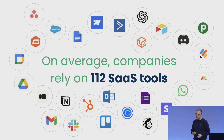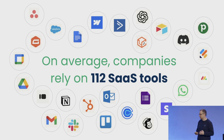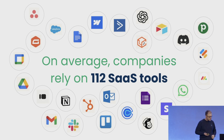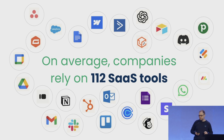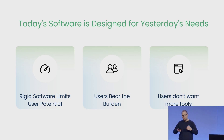Did you know that companies juggle around, on average, 112 SaaS tools? This is on Statista's statistics, and actually about half of those licenses today go unused because people just order more than they need. But even juggling that software, it means that the software they're using was designed for yesterday's needs, so users are forced into using general workflows that are meant for everyone but don't meet their unique needs.